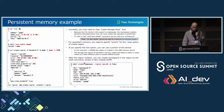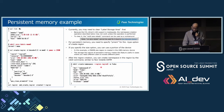The next example is persistent memory. Currently, you may need to clear the label storage area first. Because the CXL driver's LSA support is inadequate, the namespace creation operation may not work unless this is performed. To clear it, the numactl zero label command can be used as a workaround. For persistent memory, you need to specify pmem for the -t option of create-region. If you specify the size option, you can use a portion of the device — in this example a 256 MB region is created from a 2 GB memory device. The storage-like nature of persistent memory makes this useful when different users need access to different parts. After region creation, you can create a namespace in the region using the ndctl command, similar to non-volatile DIMM memory.